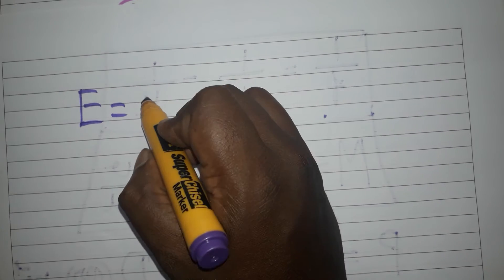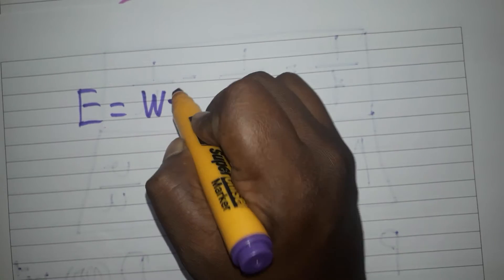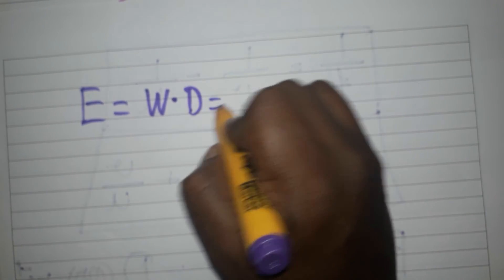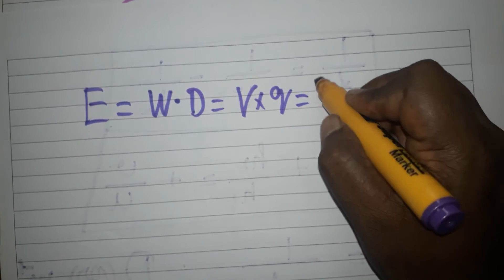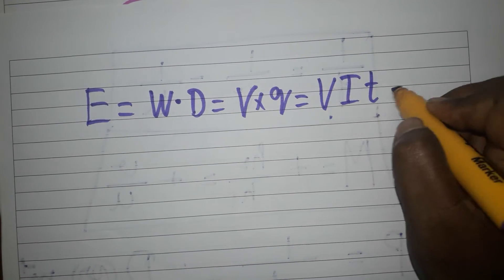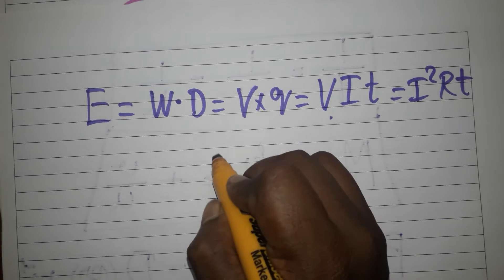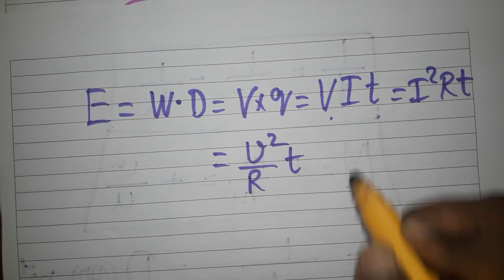Energy formula — there are four formulas for energy. Energy equals work done, which can also be written as: voltage times charge (VQ), or V times I times T (VIT), or I-squared times R times T (I²RT), or V-squared divided by R times T (V²T/R).